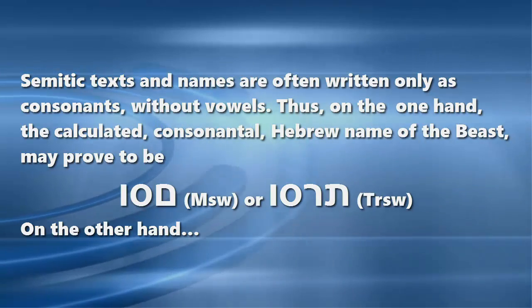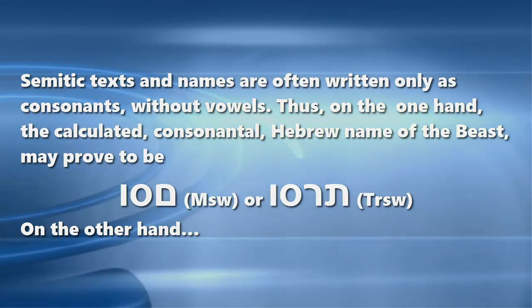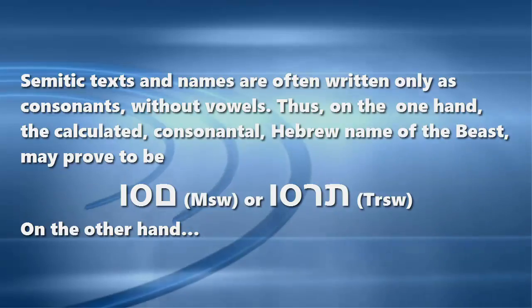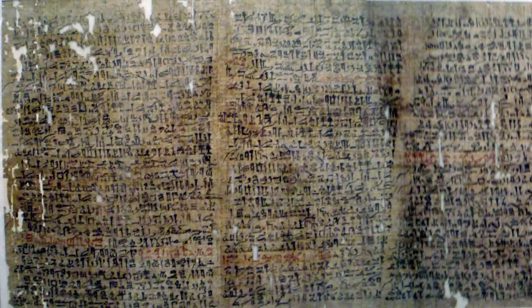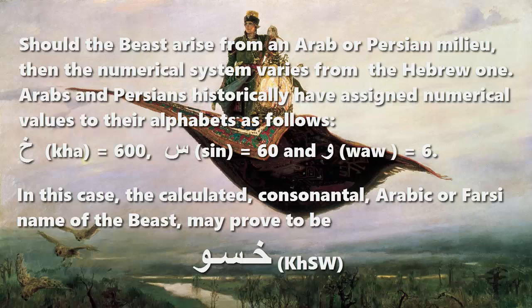Semitic texts and names are often written only as consonants, without vowels. Thus, on the one hand, the calculated consonantal Hebrew name of the beast may prove to be MShV or TRShV. On the other hand, should the beast arise from an Arab or Persian milieu, then the numerical system varies from the Hebrew one. Arabs and Persians historically have assigned numerical values to their alphabets as follows: kaf equals 600, sin equals 60, and ya equals 6. In this case, the calculated consonantal Arabic or Farsi name of the beast may prove to be KSY.